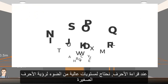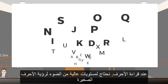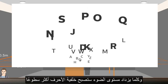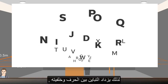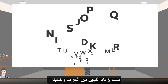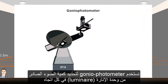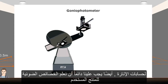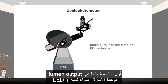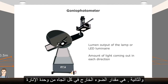When reading letters, we need a higher lighting level to see the smaller letters. As the lighting level increases, the background to the letters gets brighter, thereby increasing the contrast between the letter and its background. The better the contrast, the easier it is to see. We use a Goniophotometer to determine how much light comes out in each direction from a luminaire. For lighting calculations, we should also know about the photometric properties of the product to be used: the lumen output of the lamp or LED luminaire, and the amount of light coming out in each direction from a luminaire.